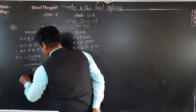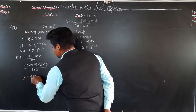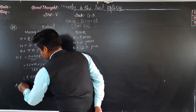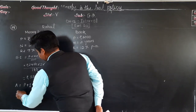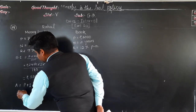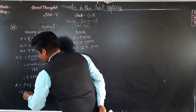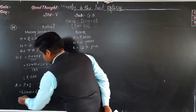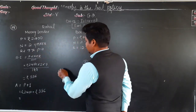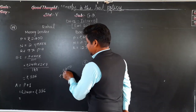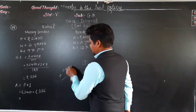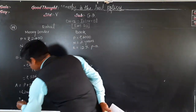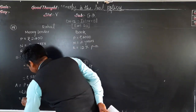So rupees 336 is the interest on the money lender loan. The amount will be principal plus interest: 2400 plus 336. Adding: 0 plus 6 is 6, 3 plus 8 is 11 — carry 1 — giving rupees 2736 as the amount for the first case.